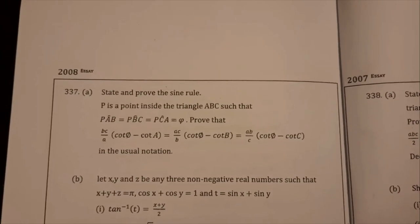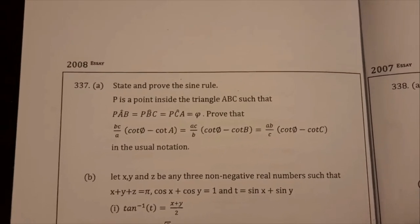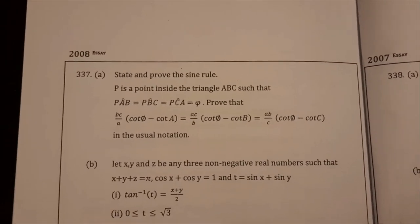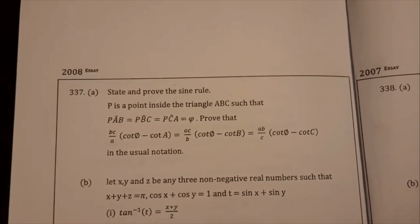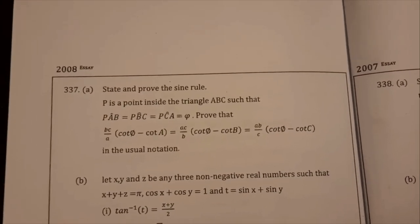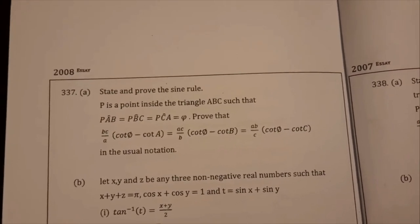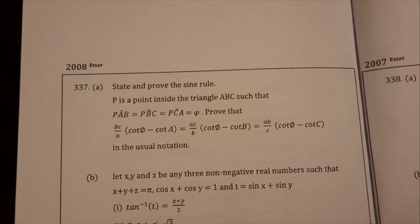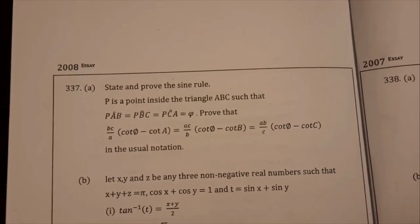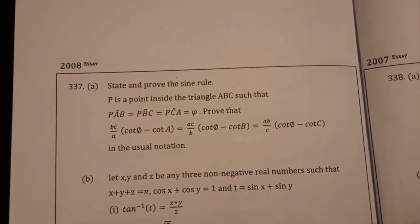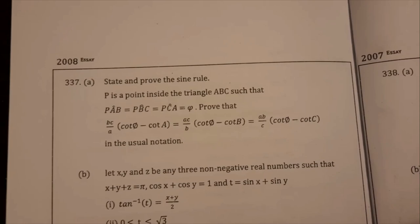P is a point inside the triangle ABC such that angle PAB equals angle PBC equals angle PCA equals phi. Prove that BC over a into cot phi minus cot A equals AC over b into cot phi minus cot B equals AB over c into cot phi minus cot C, in the usual notation.